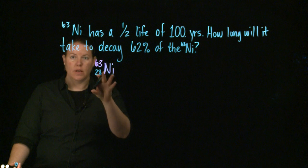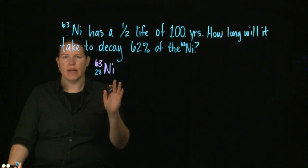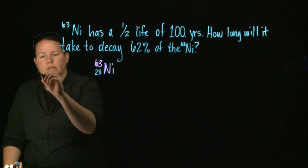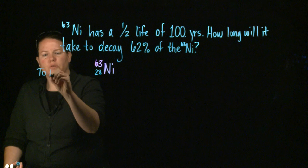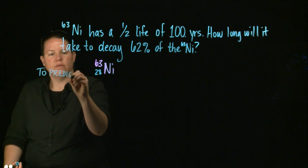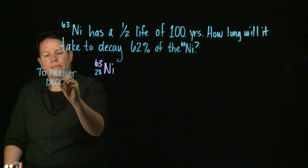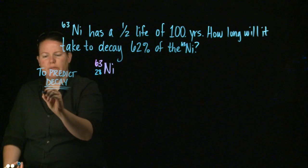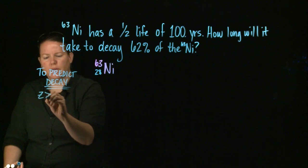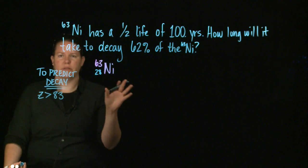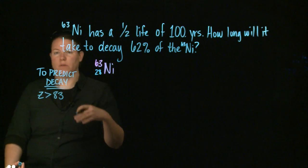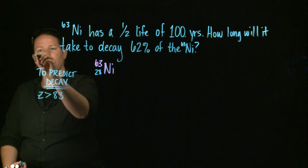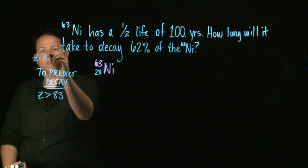So the way we figure out how something decays — how do we predict decay? There are kind of three major rules. The first rule to predict decay: the atomic number is greater than 83. Bismuth is about the end of the stable isotopes. So if the atomic number, which we label as Z — Z equals the atomic number, just to remind you.